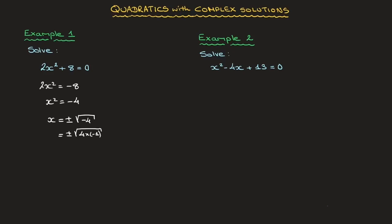Using the fact that the square root of a times b equals the square root of a times the square root of b, we get plus or minus the square root of 4 times the square root of negative 1. Then, using the fact that the square root of negative 1 is i and the square root of 4 is 2, we state the final answer as x equals plus or minus 2i.